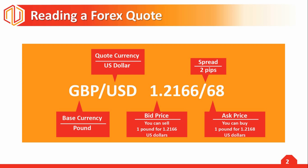In forex, the base currency represents how much of the quote currency is needed for you to get one unit of the base currency. In this example, GBP is the base currency and the US dollar is the quote currency, which translates to meaning that one pound is worth 1.2166 US dollars.